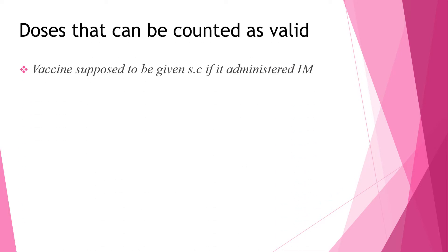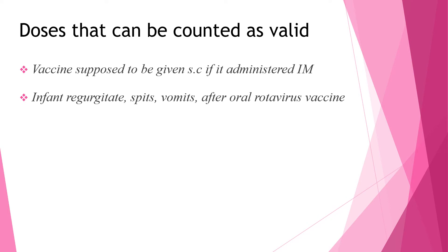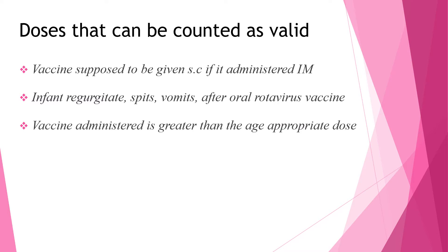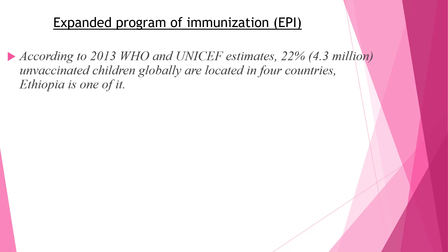Doses that can be counted as valid include: vaccine supposed to be given subcutaneous if it is given IM, if an infant regurgitates or vomits after oral rotavirus vaccine, and if the vaccine administered is greater than the age-appropriate dose. The next lesson I will discuss is about the Expanded Program of Immunization. According to 2013 WHO and UNICEF estimates, 22 percent, around 4.6 million unvaccinated children globally, are located in certain countries, and our country is one of them.